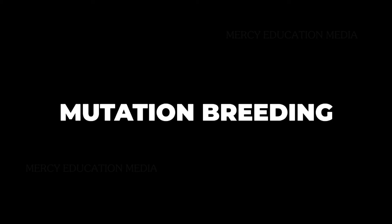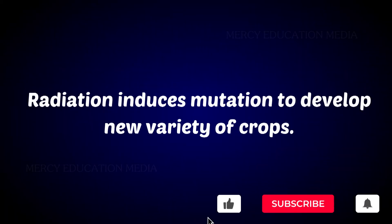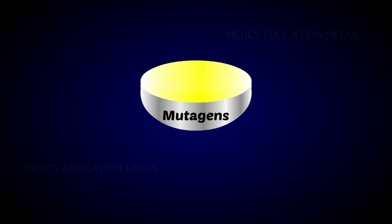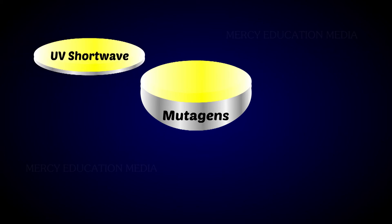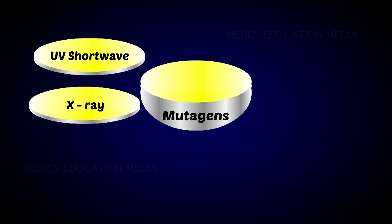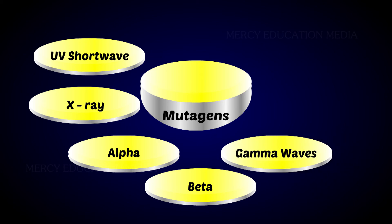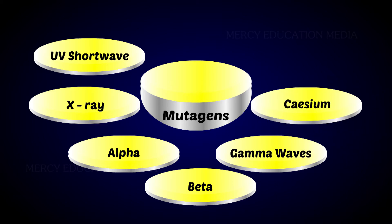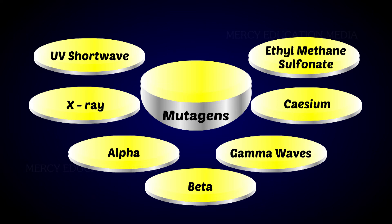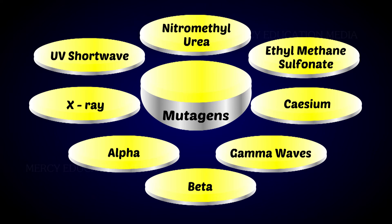Radiation induces mutation to develop new varieties of crops. With newer and more powerful sources of radiation — UV shortwave, X-ray, alpha, beta, and gamma waves — and many chemical mutagens such as cesium, ethylmethanesulfonate, nitromethyl urea, we can increase the rate of mutation.